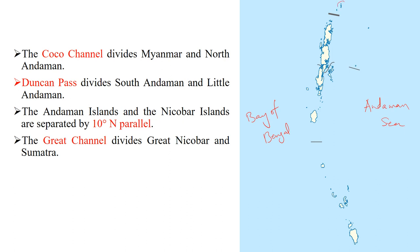These are Coco's Islands, which is part of Myanmar. This line is Coco's Channel, which divides Myanmar and North Andaman. Another important pass is Duncan Pass, which divides South Andaman from Little Andaman.